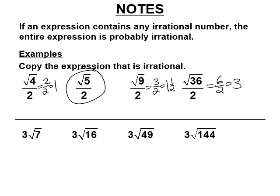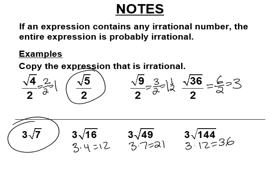This is how we write multiplication with square roots. This is 3 times 4, which is 12. This is 3 times 7, which is 21. This is 3 times 12, which is 36. And this one's irrational, because the square root of 7 is some irrational number that goes on forever, and you multiply it by 3 — it's still going to go on forever and still going to be irrational.